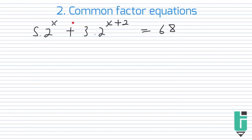So because we have a plus here, we can't really find a similar base and then set exponents equal to each other. It's not going to work. So what we'd rather do is consider finding a common factor.